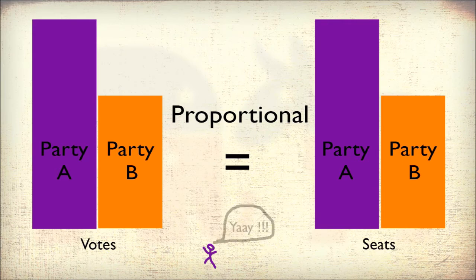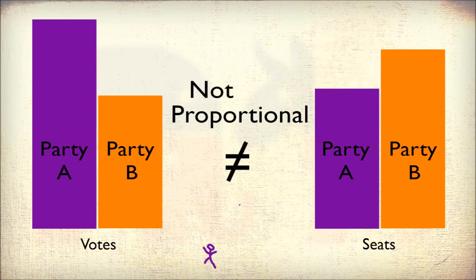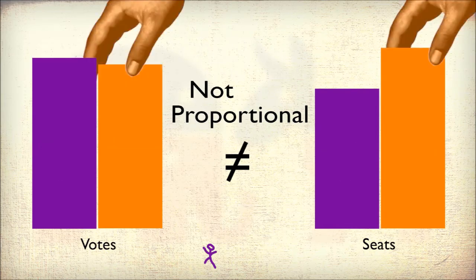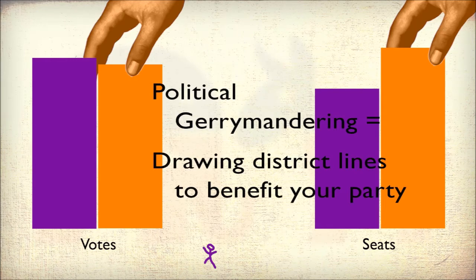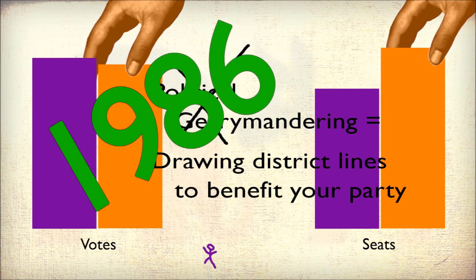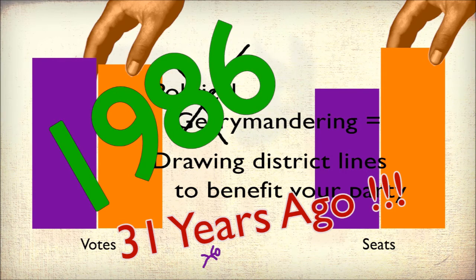Then everyone in your state, including you, is equally represented. This does not always happen. Naturally there are fluctuations, and sometimes these fluctuations are not natural. When district lines are redrawn so one party is over-represented in government, it is called political gerrymandering. Political gerrymandering was declared unconstitutional in 1986 by the US Supreme Court, but in the 31 years since, a political gerrymandering case has never been successfully tried, even though quite disproportionate states have been brought to trial.